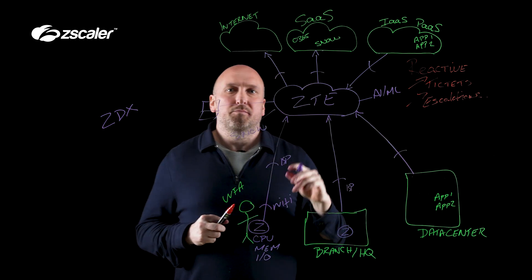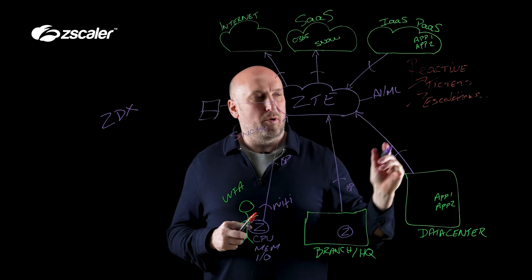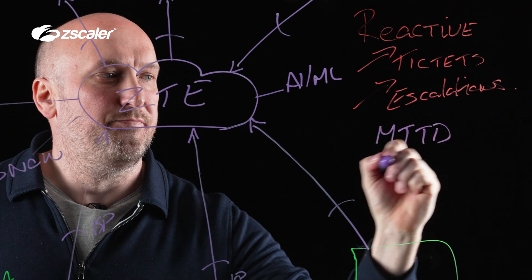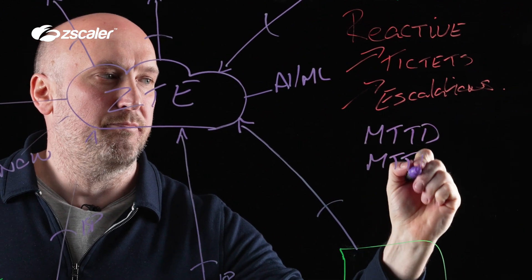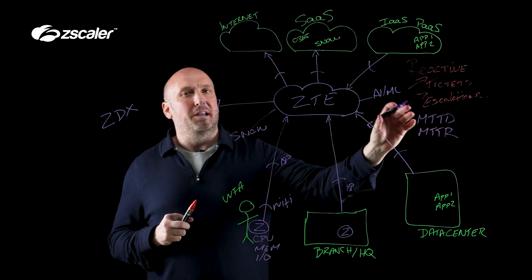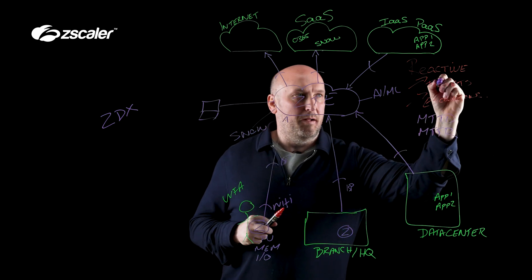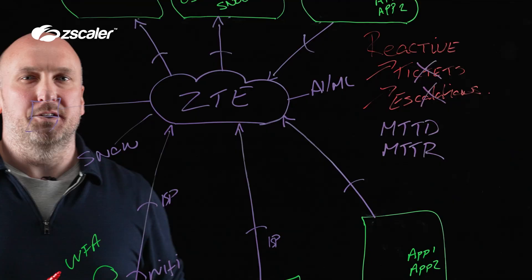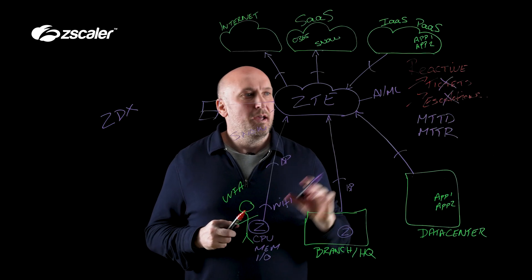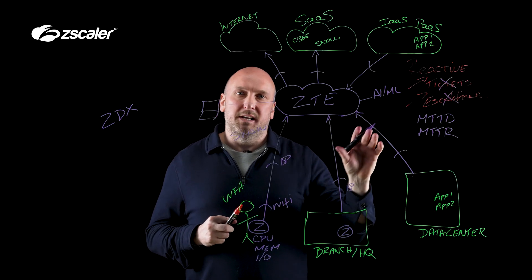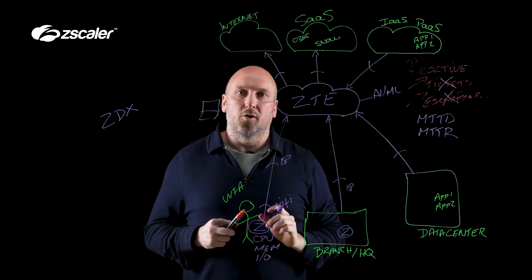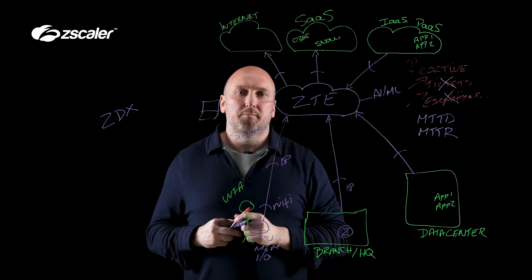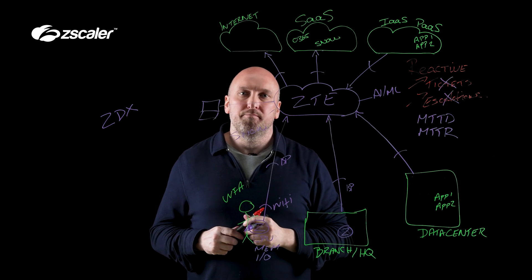The two key metrics every support leader looks at are mean time to detection and mean time to resolution. If we can bring these numbers down, we're going to reduce ticket count and escalations, and give ourselves better productivity. If you'd like to find out how ZDX can reduce MTTD and MTTR for your organization and support infrastructure, reach out to your account team — we'll be more than happy to set up a workshop. Thank you.